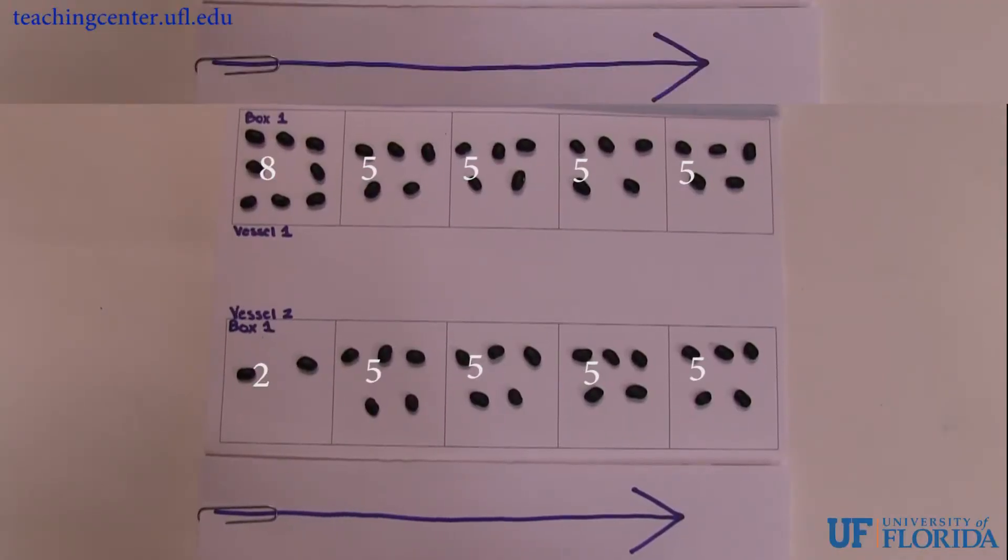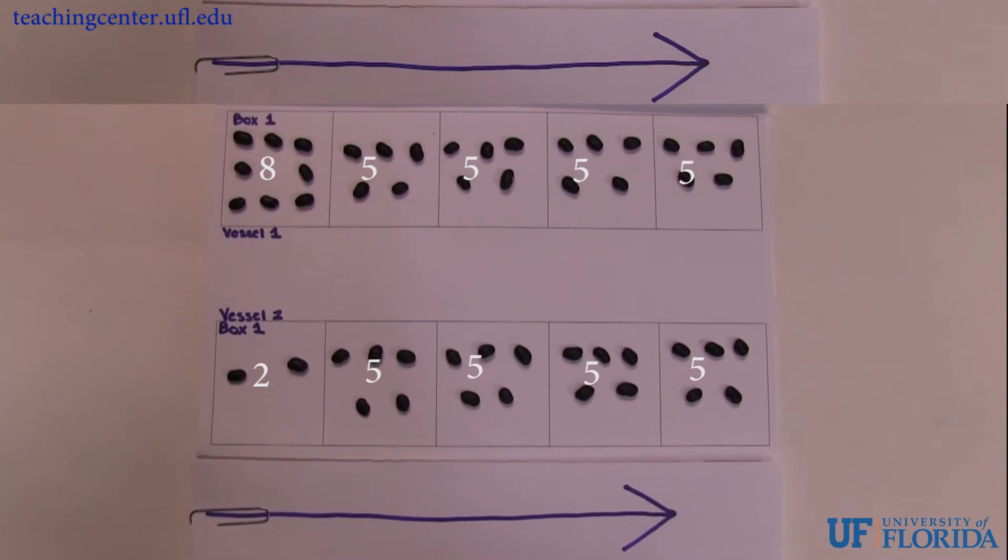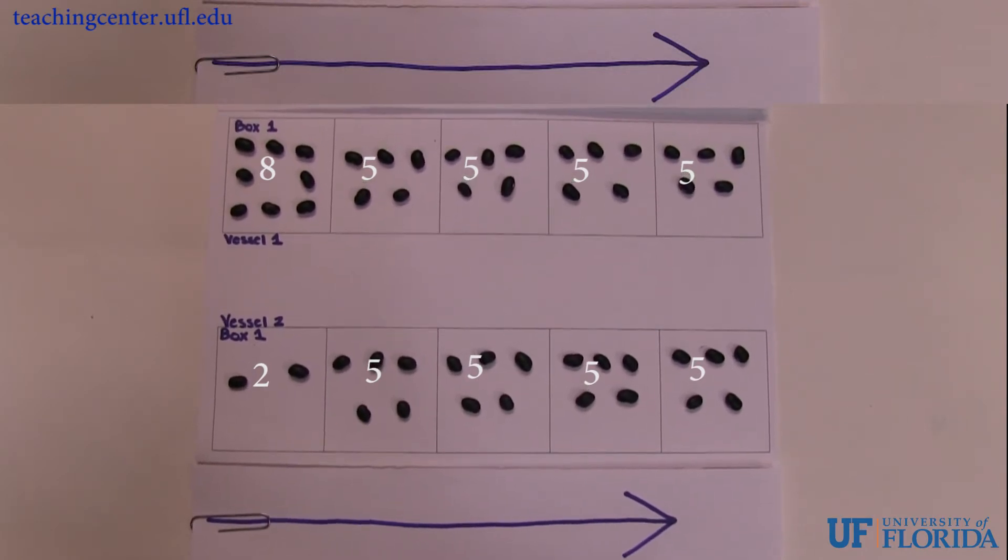We will now use beans to show heat exchange, or for this example, bean exchange, between vessels in concurrent and counter-current flows.